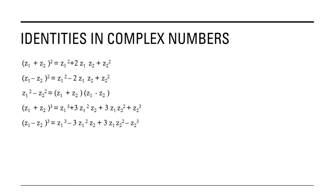Now these are the various identities in complex numbers, all familiar from real numbers but with z1 and z2 in place of a and b. z1 plus z2 whole square equals z1² plus 2·z1·z2 plus z2². z1 minus z2 whole square equals z1² minus 2·z1·z2 plus z2². z1² minus z2² equals (z1 plus z2)(z1 minus z2). z1 plus z2 whole cube equals z1³ plus 3·z1²·z2 plus 3·z1·z2² plus z2³. z1 minus z2 whole cube equals z1³ minus 3·z1²·z2 plus 3·z1·z2² minus z2³.